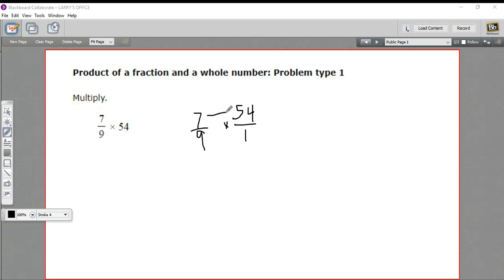And when you multiply, you multiply across the top and across the bottom. If you did that, in this case, you'd get 7 times 54. I'm going to grab my calculator for that. That's 378. And 9 times 1 is 9.